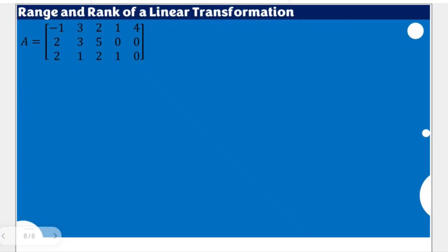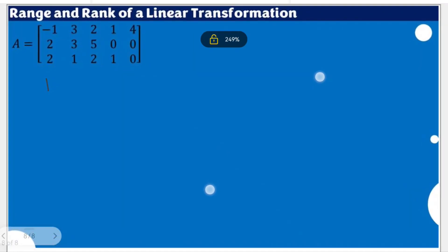Using this given matrix, we have a 3 by 5 matrix. Let's try to solve for the basis of the range and then the rank of the linear transformation defined by this matrix. The process of solving for the basis includes transforming this matrix into its equivalent reduced row echelon form, because the basis of the range is equal to the column space of matrix A.